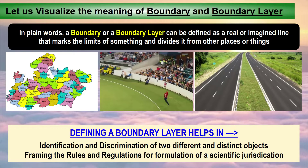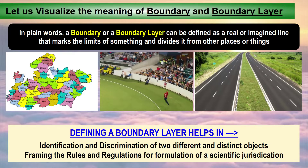What do we gain by defining a boundary layer? It helps in two important things: number one, identification and discrimination of two different and distinct objects, as seen from the three pictures. And also, it helps in framing the rules and regulations for formulation of a scientific jurisdiction. But as we go deeper into this field, the complications arise.